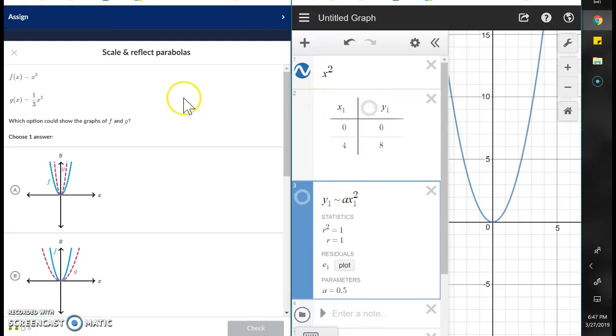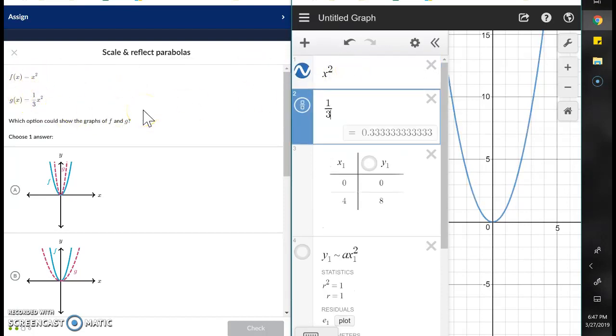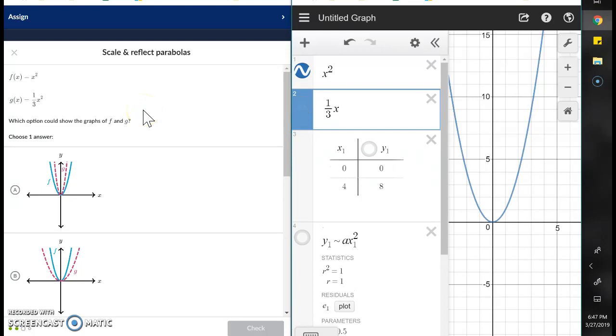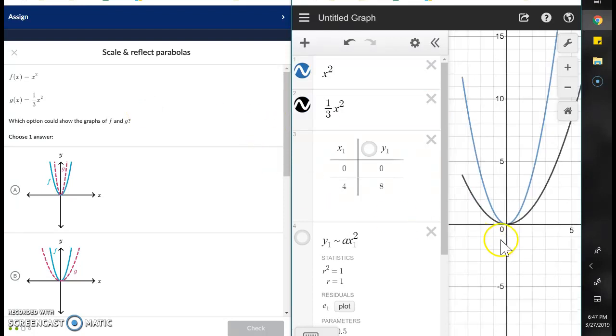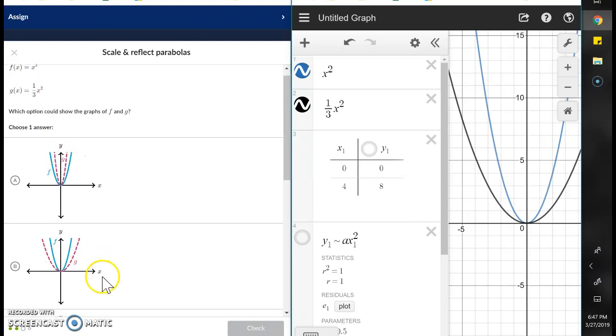Okay, here it's giving us the base function, asking us to scale it by one-third. So I'm going to go ahead and put that in here and I'm just matching it up. Which one looks similar? All right, this one. They're scaling inward. Blue is f, g is the dashed. We want f to be more narrow than g.